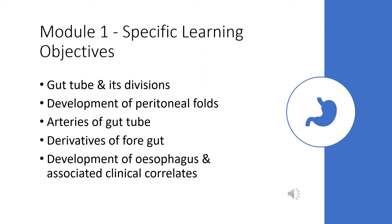These are the specific learning objectives of the first module on the development of the gastrointestinal tract. First, we will see the primitive gut tube and its divisions. We will also see the development of the various peritoneal folds associated with the GIT, the arteries that supply the gut tube, then the derivatives of the foregut, and lastly the development of the esophagus and its associated clinical correlates.